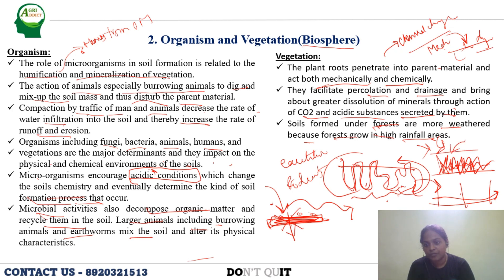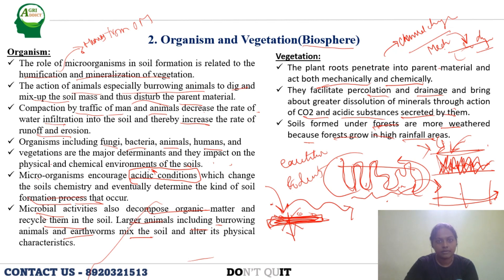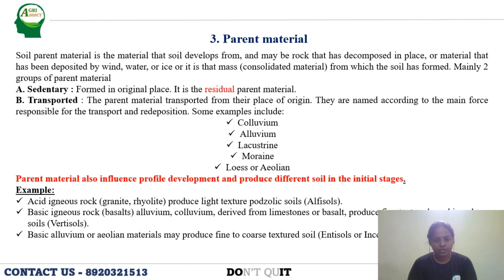Grasses, even under high rainfall, cover the soil surface in a compact nature and intercept water, decreasing leaching losses. The next factor is parent material. Parent material is the material that soil develops from — it may be a rock that has decomposed in place, or material transported by wind, water, or ice. It is the consolidated mass from which the soil has formed.